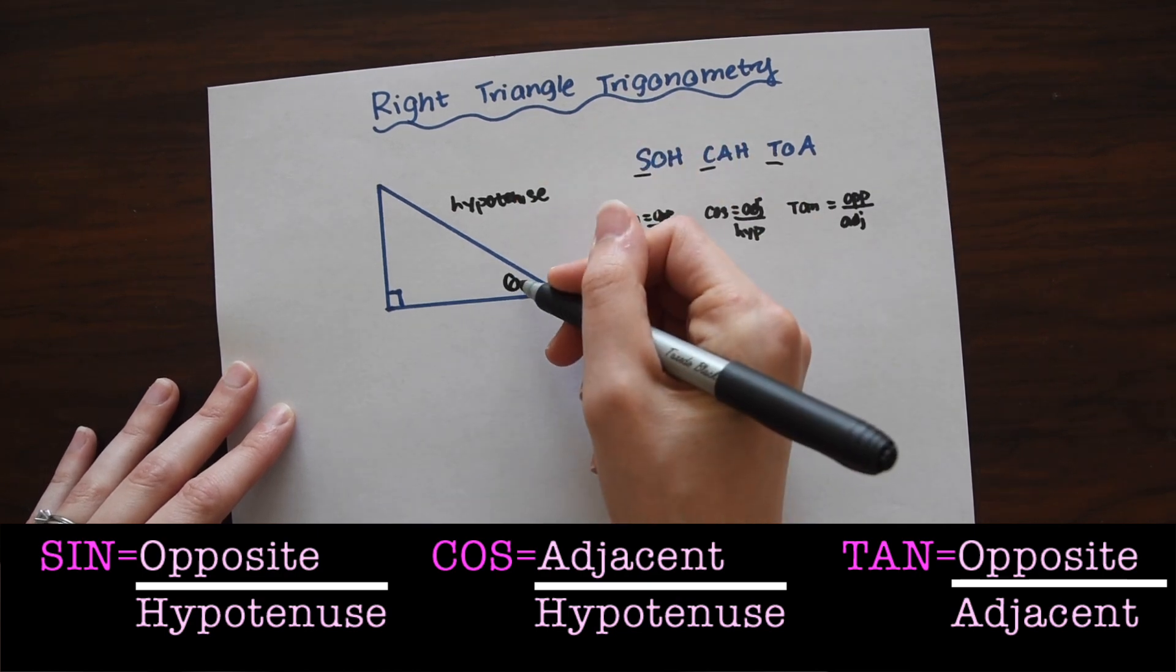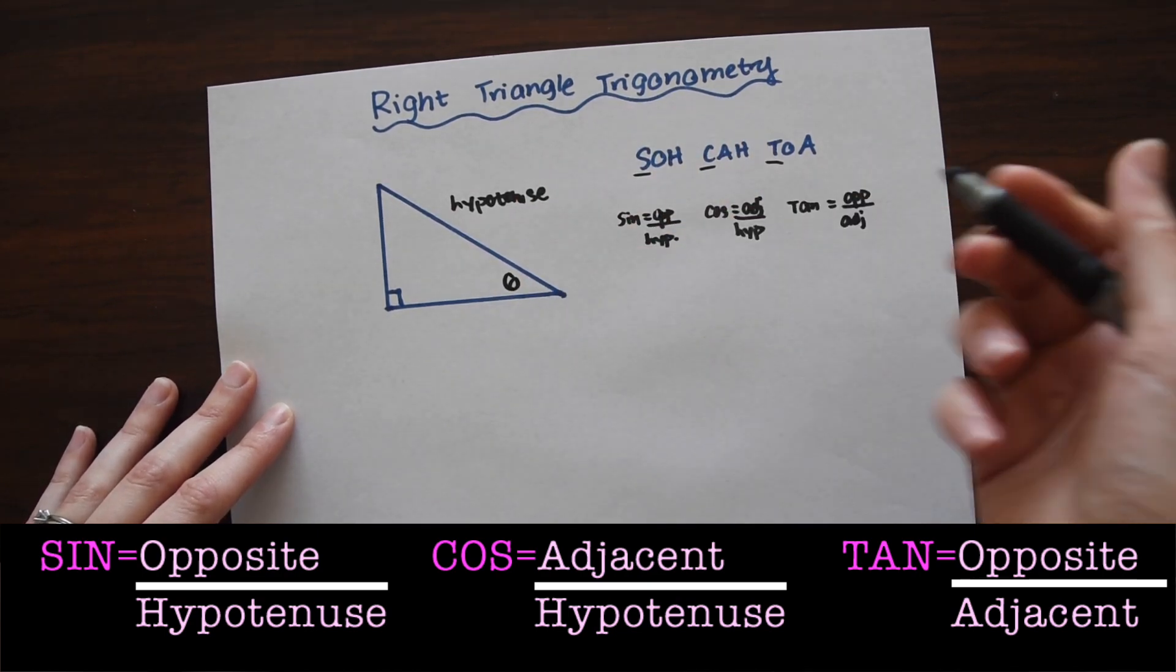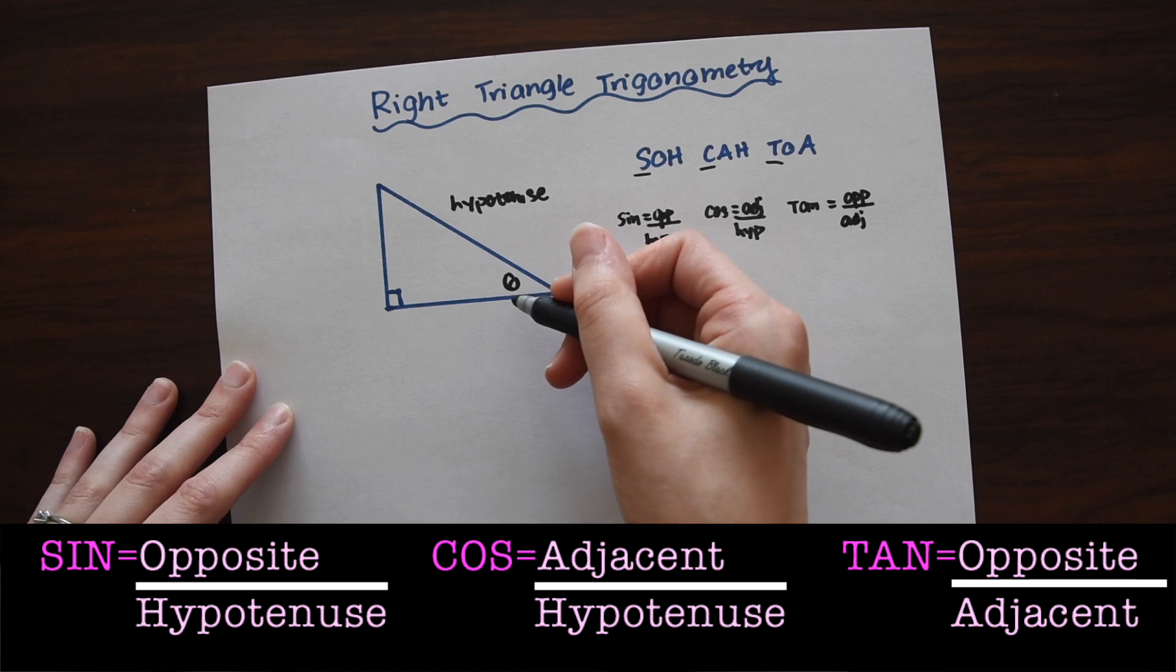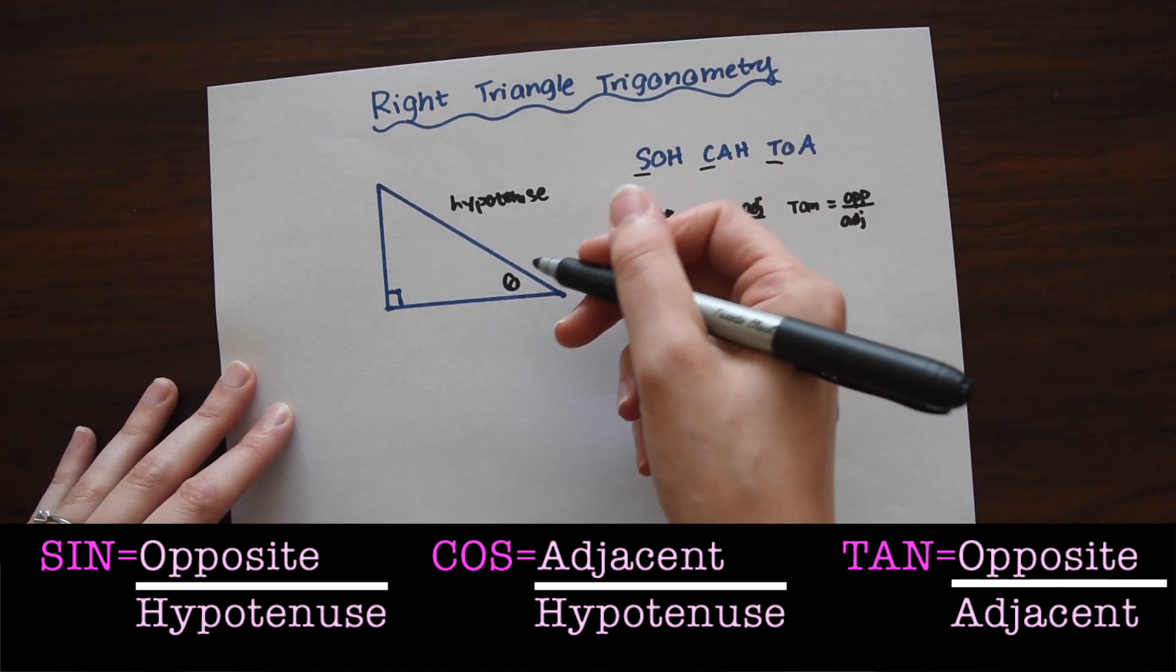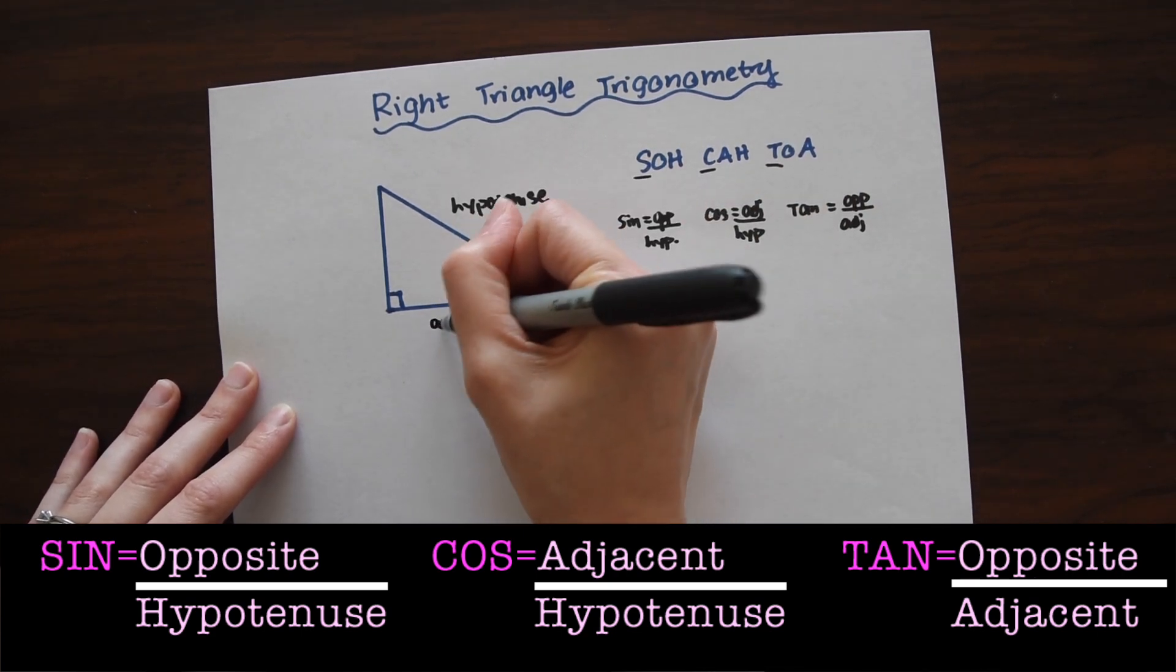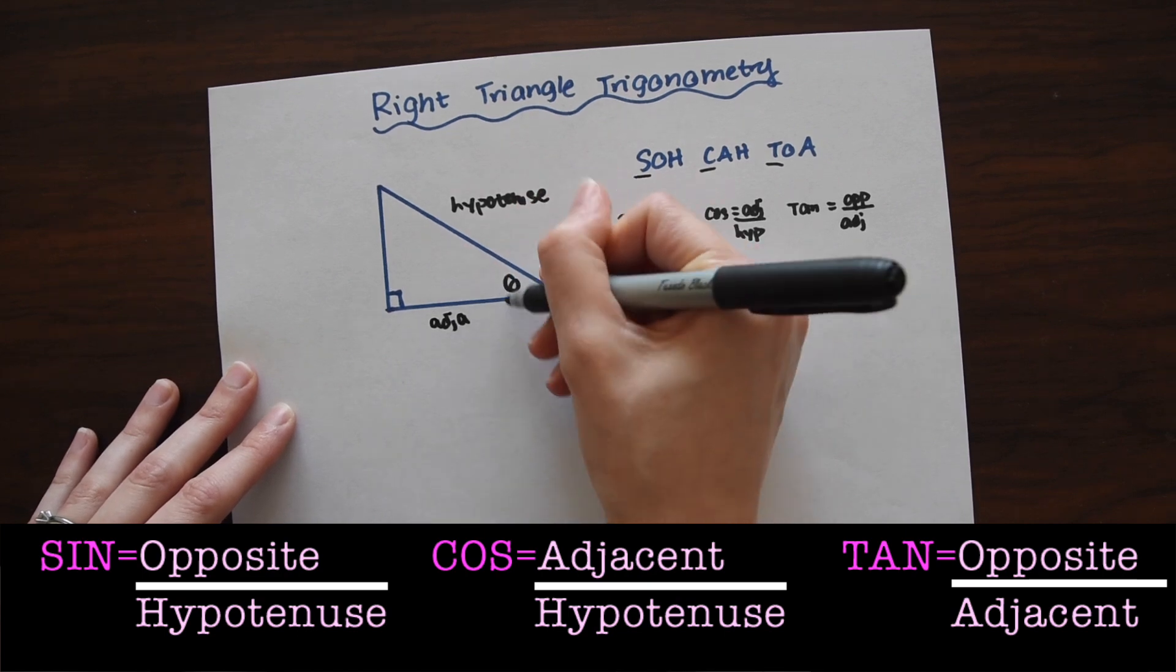So if we have an angle theta here, the adjacent is next to—the adjacent side of the right triangle is next to the angle. So adjacent is just going to be right here, because it's right next to this angle here.